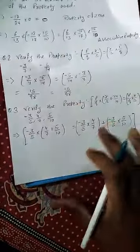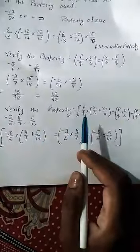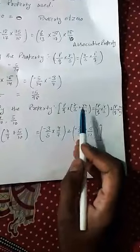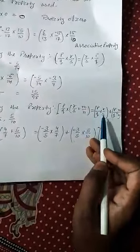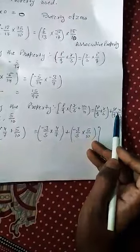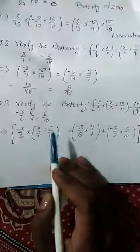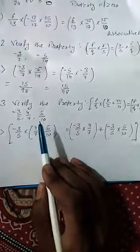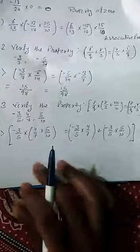Next question number 3: Verify the property p by q multiply bracket r by s plus m by n equals p by q multiply r by s plus p by q multiply m by n. We need to verify this property. The numbers are minus 3 by 5, 4 by 7, and 5 by 10. We have put all the values. We need to solve these.